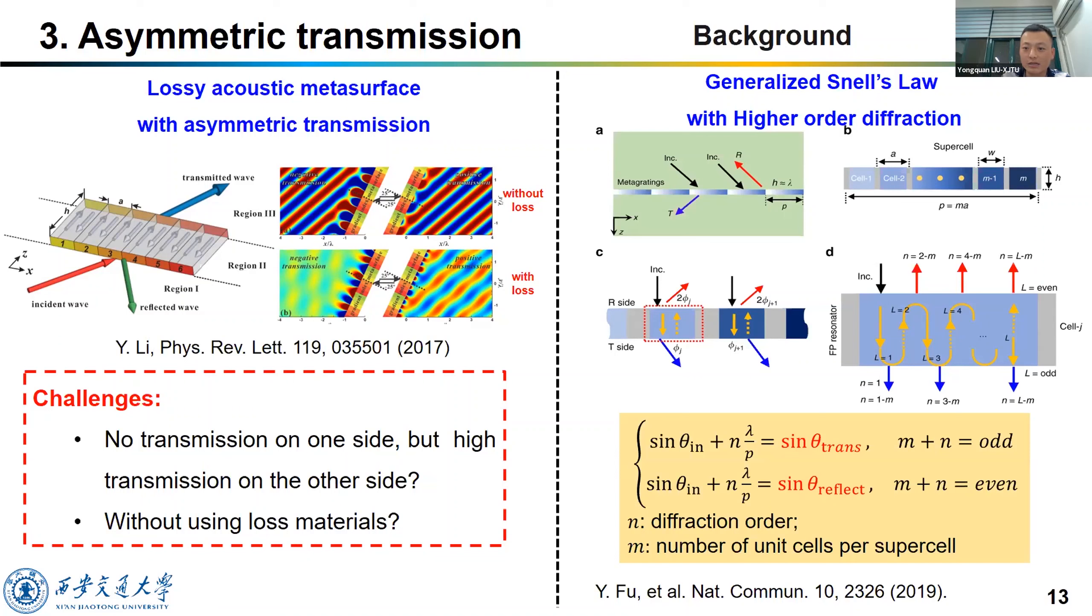Fortunately, last year, Fu Yangyang from Suzhou University has found a modification form of the Generalized Snell's Law. They found that the number of unit cells are very important to the wave propagation behaviors. We can change the diffraction order n and the number of unit cells m to decide whether the waves transmit or reflect. Now, we will use this principle to design asymmetric transmission metasurface.